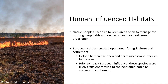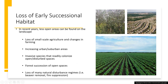Prior to heavy European influence, a lot of these species were likely more transient, moving from one canopy gap to another. In modern times, we are seeing the loss of quite a bit of our early successional habitat. In recent years, there are less and less open areas found on the landscape, due to a variety of factors. One is the loss of small scale agriculture and changes in the way we farm, moving from small family farms that kept areas fallow to large scale fence-row-to-fence-row farming.